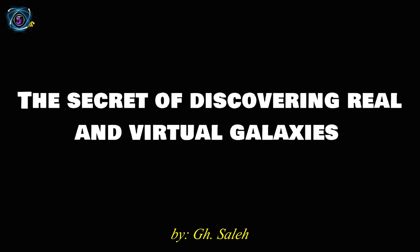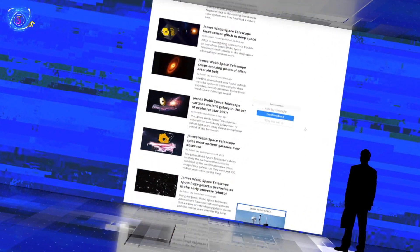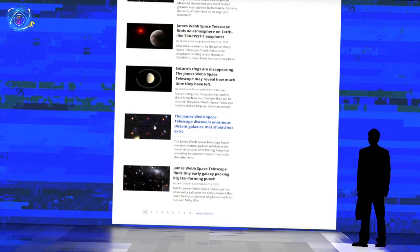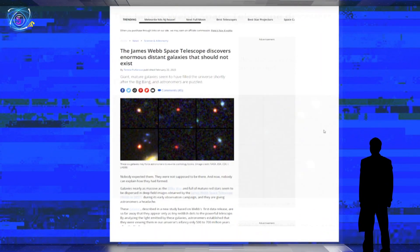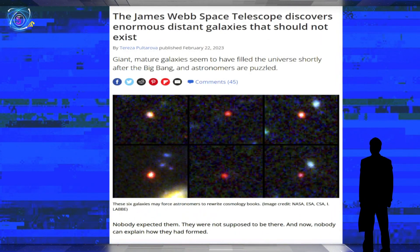The Secret of Discovering Real and Virtual Galaxies. The James Webb Space Telescope discovers enormous distant galaxies that should not exist. Giant mature galaxies seem to have filled the universe shortly after the Big Bang, and astronomers are puzzled. Nobody expected them. They were not supposed to be there, and now nobody can explain how they had formed.